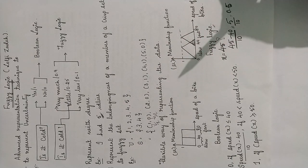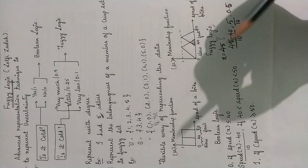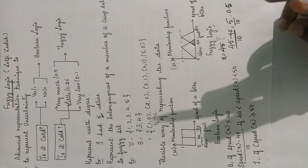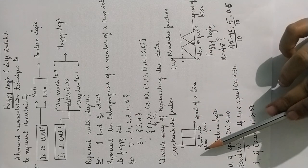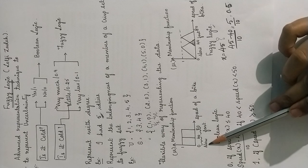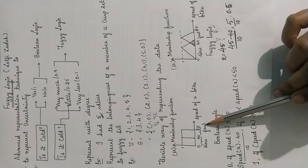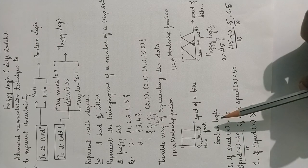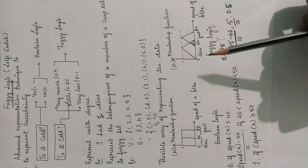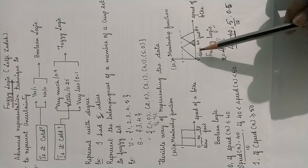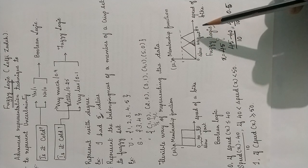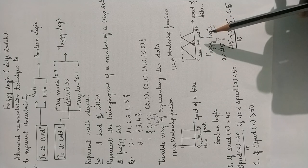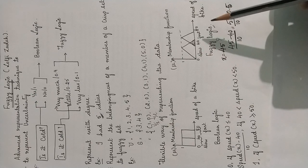The next question is: why fuzzy logic? Consider the example of the speed of a bike in Boolean logic — we have only 2 ways of representing it. If the speed is between 0 to 40 we consider it slow; between 40 to 80 we consider it fast. But in fuzzy logic we cannot categorize like that, because if the speed is 42, 50, or 39.99, we cannot consider it completely slow or completely false. So we use fuzzy logic to represent the data in an accurate manner.